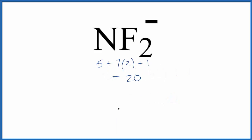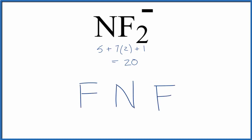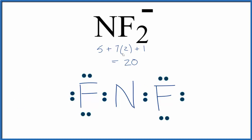We'll put the least electronegative element in the center — that's the nitrogen. Put a fluorine on either side. We'll place a pair of electrons between atoms; that forms our chemical bond. Then we'll complete the octets around the fluorine atoms. At this point we've used 16 valence electrons. The fluorines have their octets. Then we'll complete the octet around the nitrogen, and we've now used all 20 valence electrons. So this is the Lewis structure for NF2-.